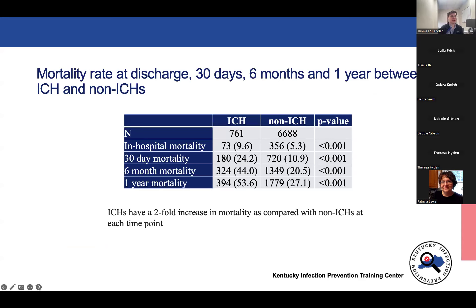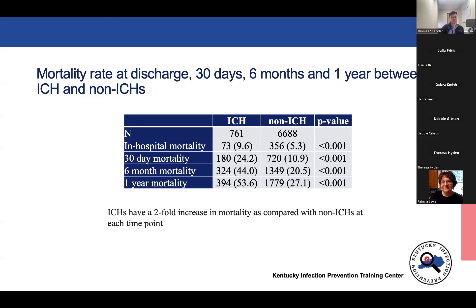Looking at mortality, the rate among immunocompromised hosts is almost a twofold increase at each time point. At one year, over 50% of immunocompromised hosts had died. If a physician sees four immunocompromised patients with CAP in a month, at least two of those patients can be expected to be dead at one year. This definitely warrants emphasis on prevention among immunocompromised hosts and further studies to identify the factors contributing to this high mortality rate.